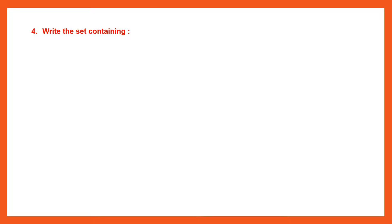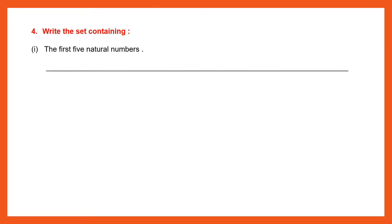Question 4: Write the set containing the first five natural numbers. Natural numbers start from 1, so the set is {1, 2, 3, 4, 5}. This is the set containing the first five natural numbers.